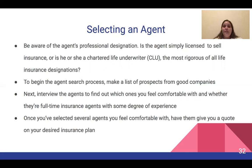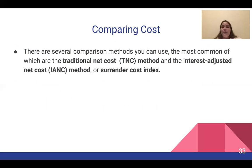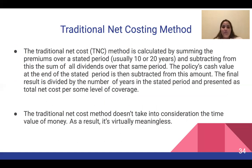To begin the agent search process, make a list of prospects from good companies. Interview agents to find out which ones you feel comfortable with and whether they're full-time insurance agents with experience. Once you've selected several agents, have them give you a quote on your desired insurance plan. There are several cost comparison methods, the most common being Traditional Net Cost (TNC) and Interest Adjusted Net Cost (IANC), also known as Surrender Cost Index. TNC is calculated by summing premiums over a stated period (usually 10 or 20 years), subtracting dividends and the policy's cash value at the end of the period, then dividing by the number of years — but it doesn't take the time value of money into consideration, so it's practically meaningless.